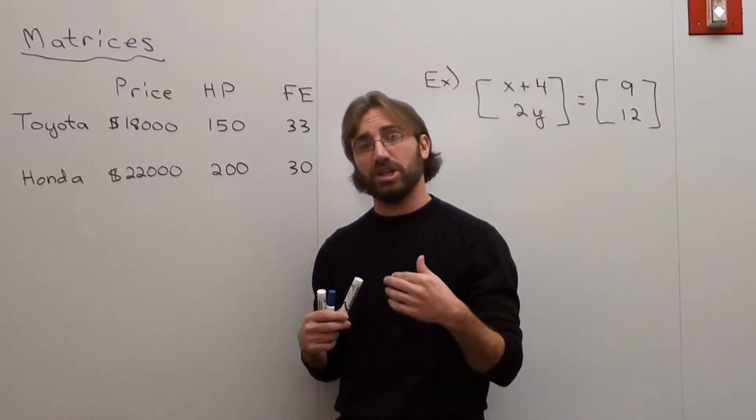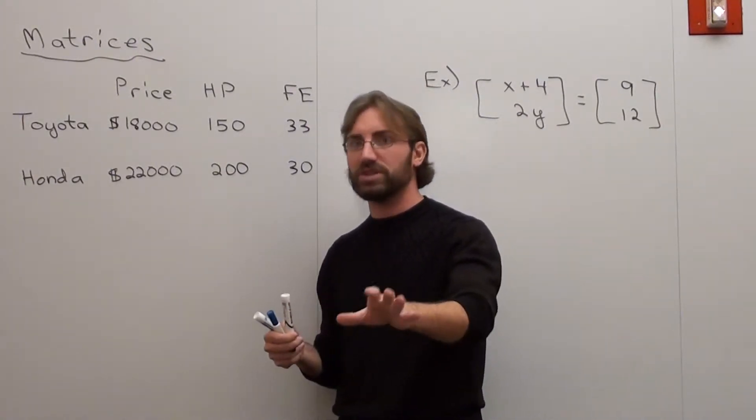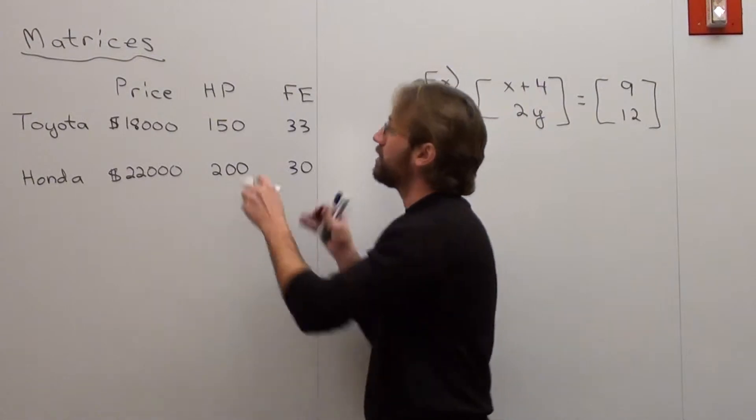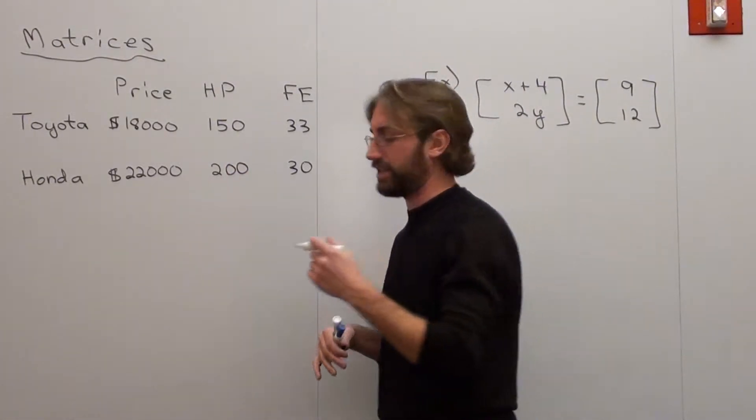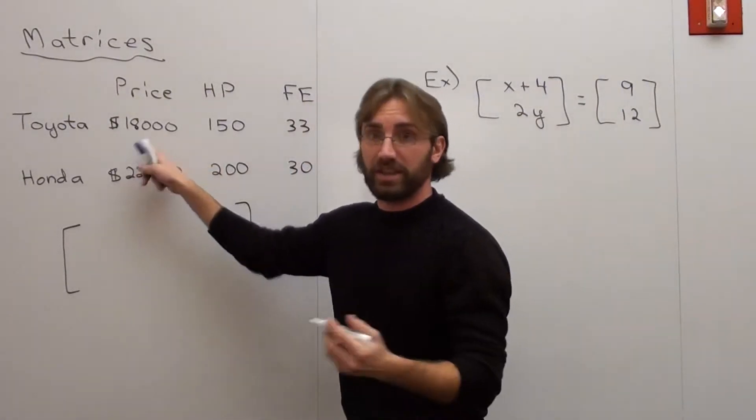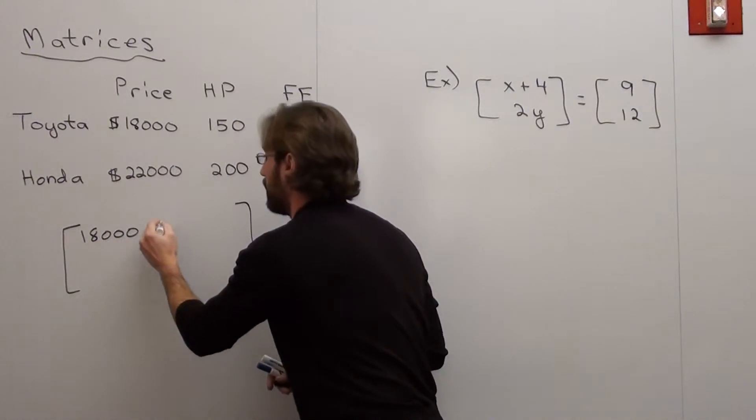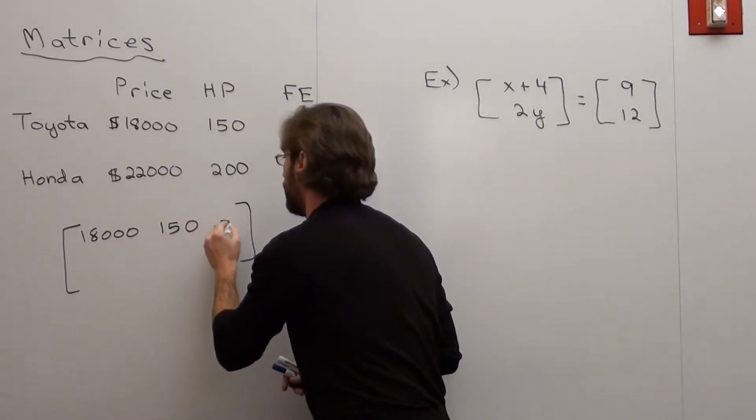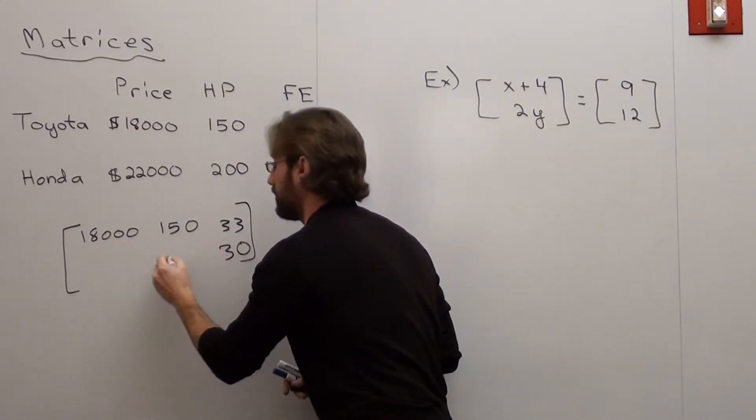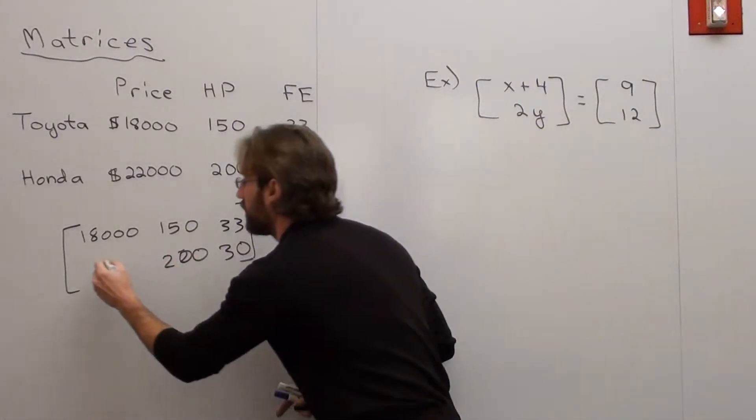Basically what we're going to do is we're going to create a two by three matrix. Before you get a little confused at that, just let me show you what you do. You take this information and you put it in brackets. So we're going to put 18,000, 150, 33, this one is 30, 220, excuse me, that's 200, and that's 22,000.